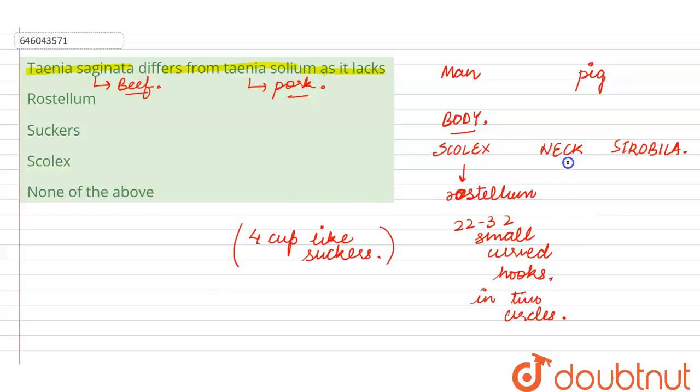While the other part is the neck and the strobila, the strobila has got the proglottids. So, the proglottids can either be the immature, mature or the gravid proglottids.